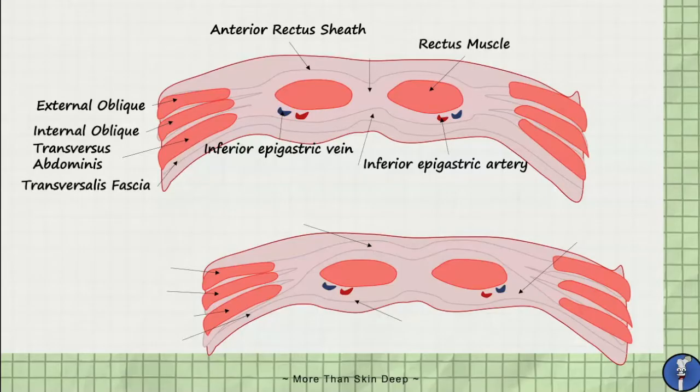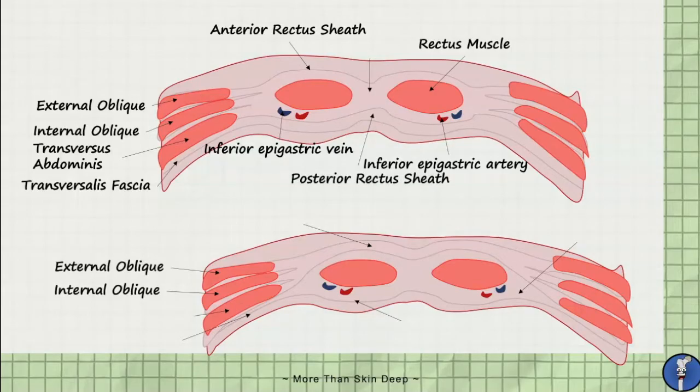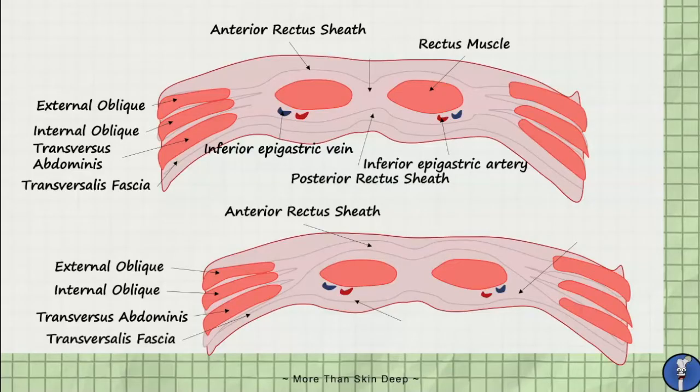Below the arcuate line, where the cesarean will be, the anatomy is a bit different. Here, the anterior rectus sheath is very thick, as the aponeurosis of the external oblique, internal oblique, and transversus abdominis all make up the anterior rectus sheath, superficial to the rectus abdominis muscle. Posterior to the rectus muscle is the posterior rectus sheath, made up of the transversalis fascia layer.